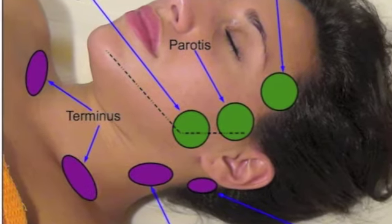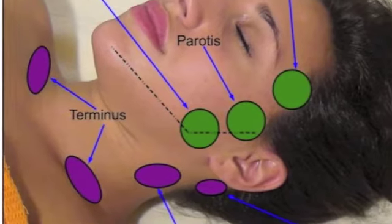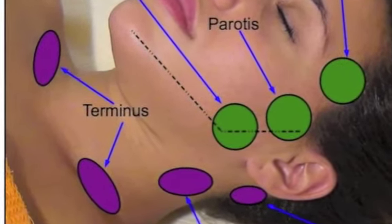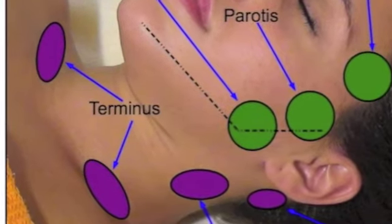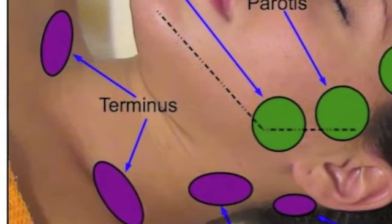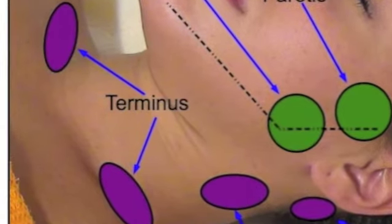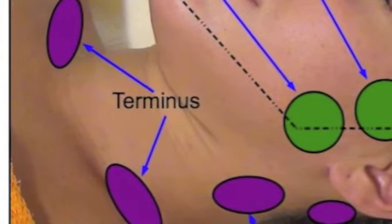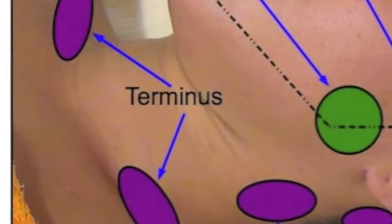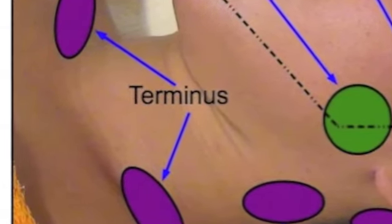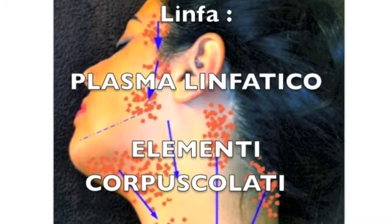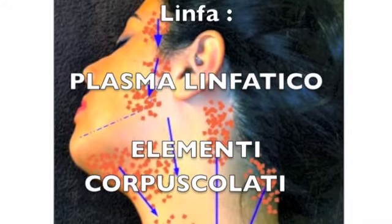This final entry point is at the terminus, where the subclavian artery and the jugular vein unite. Our task through lymphatic drainage is to supply as much liquid as possible to the terminus so that the lymph re-enters the venous system.